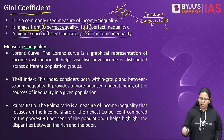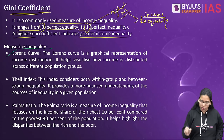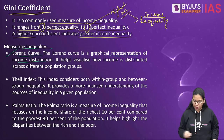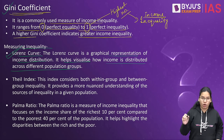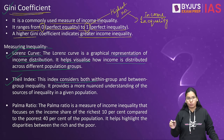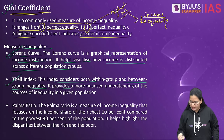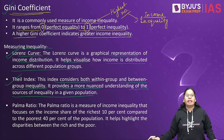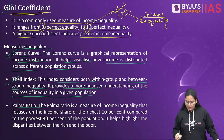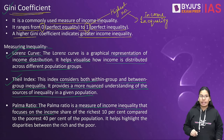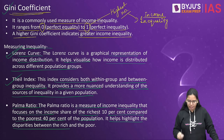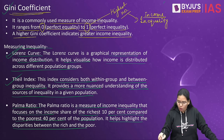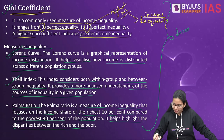We also have other tools to measure inequality. First is the Lorenz curve — a graphical representation of income distribution that helps visualize how income is distributed across different population groups. Second is the Theil index, which considers both within-group and between-group inequality, providing a more nuanced understanding of the sources of inequality. Third is the Palma ratio — a measure of income inequality that focuses on the income share of the richest 10% compared to the poorest 40% of the population, highlighting disparities between the rich and poor. Please remember all of these show income inequality — a very important topic for your economy part.